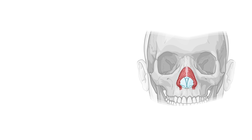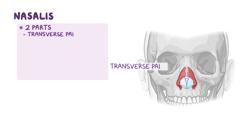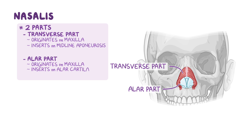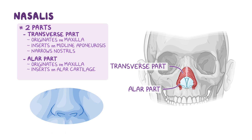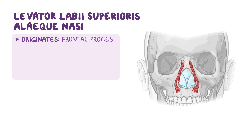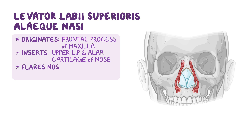The largest muscle of the nose is the nasalis, which is made of two parts: a transverse part and an alar part. The transverse part originates on the maxilla on either side of the nose and extends towards the dorsum of the nose, meeting in the midline to insert on an aponeurosis. The alar part also originates on the maxilla over the lateral incisor and inserts on the alar cartilage. The transverse part narrows the nostrils and the alar part expands or flares them. The levator labii superioris alaeque nasae originates on the frontal process of the maxilla, inserts on the upper lip and the alar cartilage of the nose, and flares the nostrils while raising the upper lip.